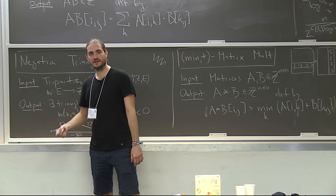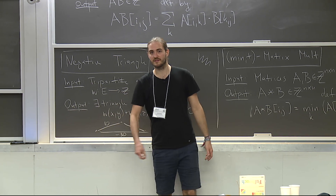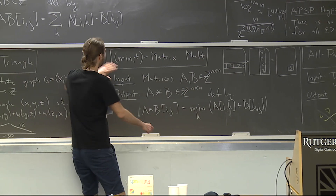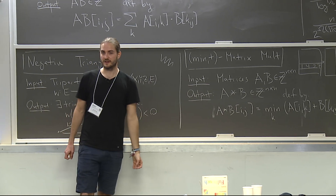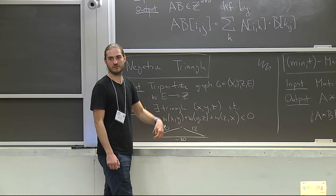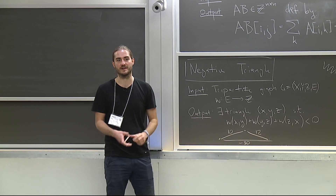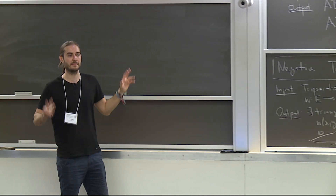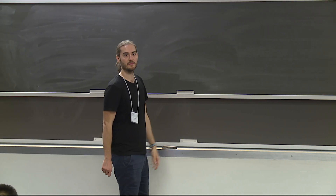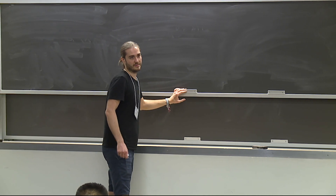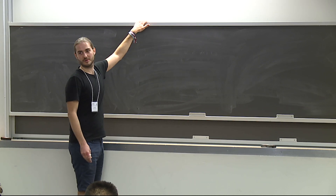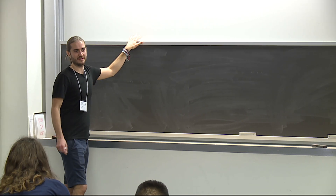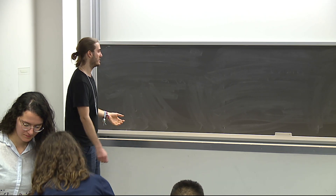Now in the second part of this lecture, we'll actually see that this hypothesis implies also that negative triangle and min-plus matrix multiplication cannot be solved faster than N cubed, and in fact that it's equivalent to saying that negative triangle cannot be solved faster than N cubed. So we'll see a sequence of subcubic equivalences between these three problems. And then in the next part, Mia is going to show you even more subcubic equivalences, and on the exercise sheet you'll do even more.